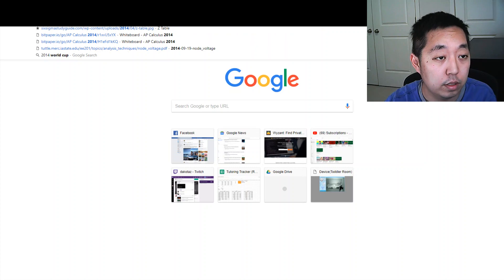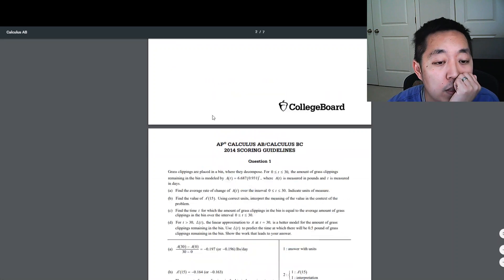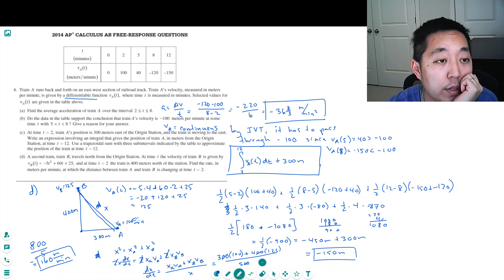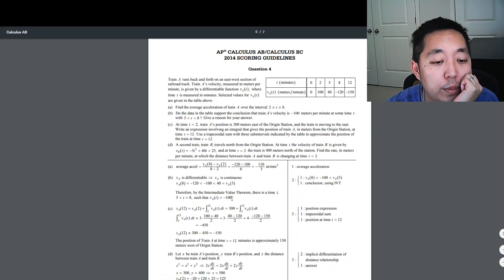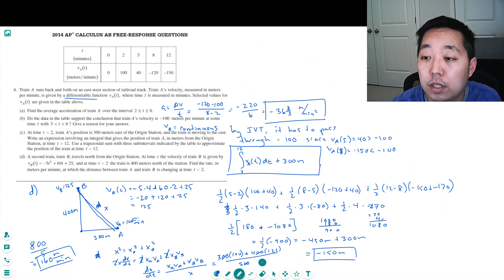Let's take a look at the 2014 AP Calculus scoring guidelines to see how we did. Minus 110 over 3 - yeah, that's what I got. It's continuous by the intermediate value theorem. Yep, because it's between those two values, minus 150. I got the integral set up correctly: 300 plus this, so it's minus 150. And I got 160 meters per minute. All right, cool, we got that one right. Thanks for watching. That's the fourth question of the AP Calculus free response.